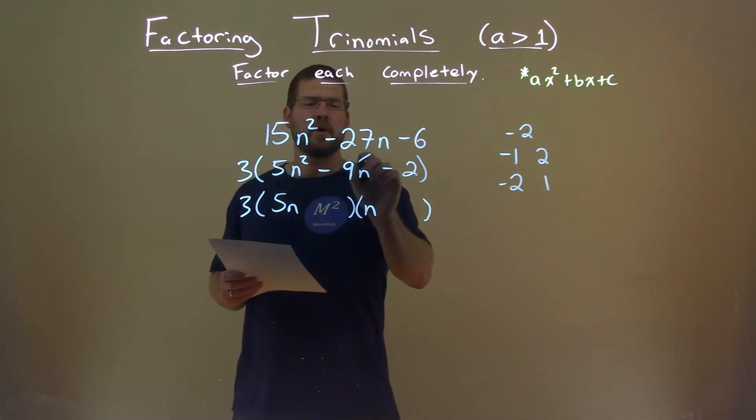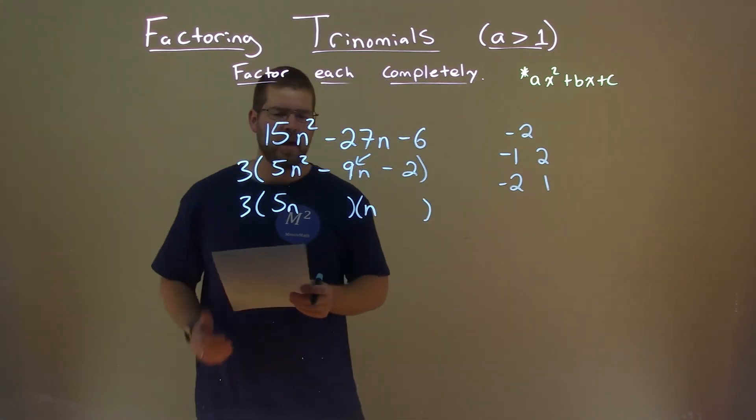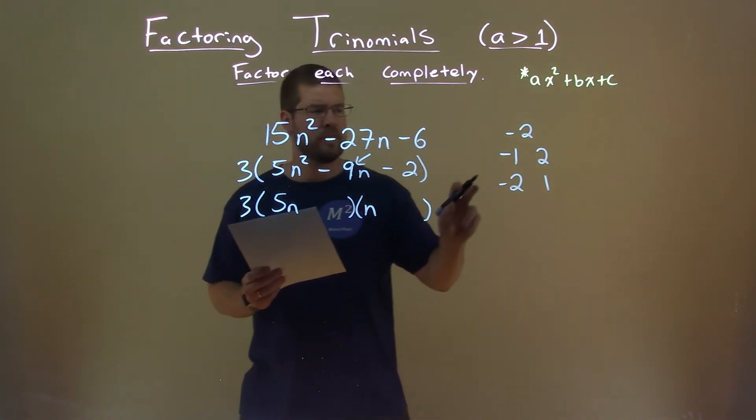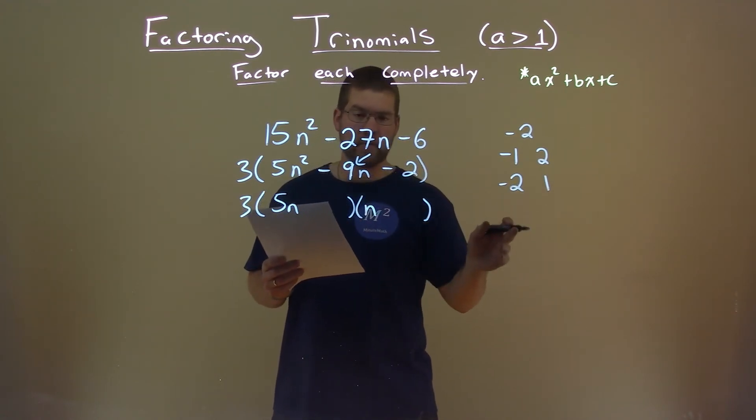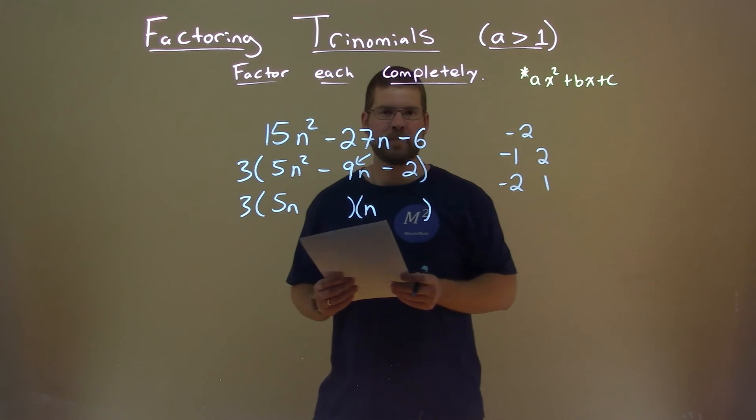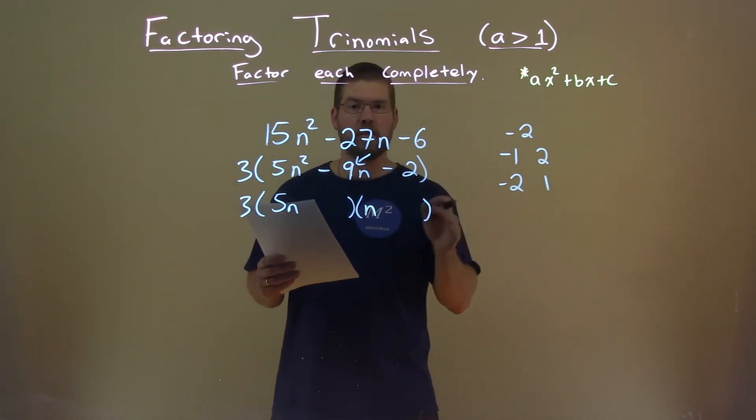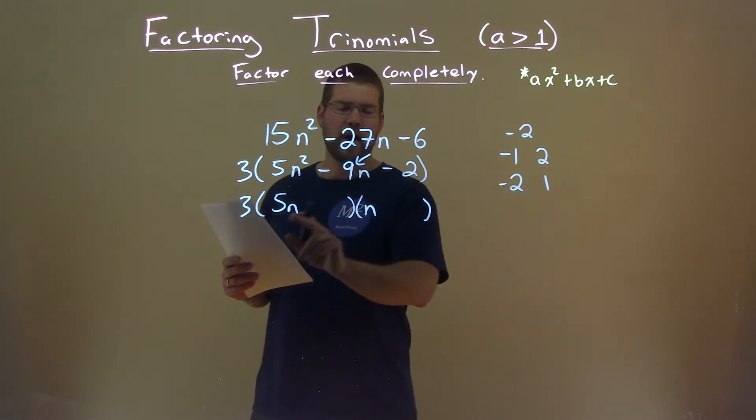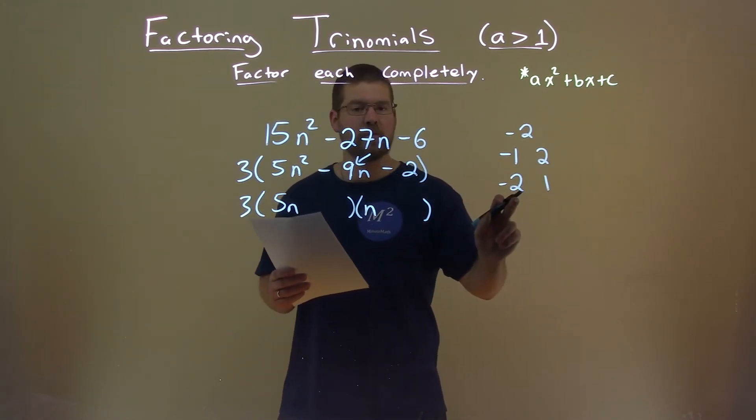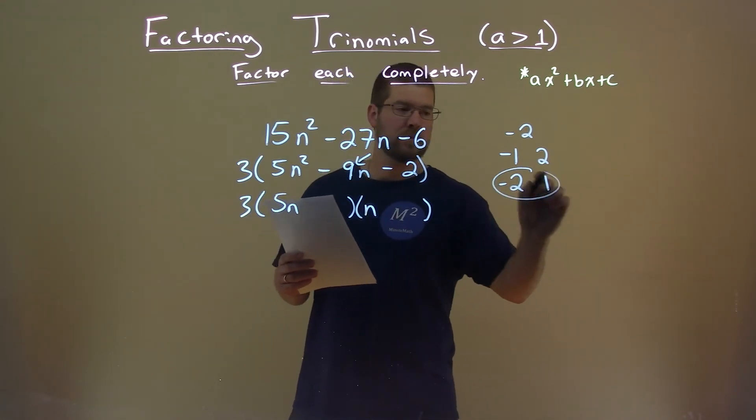So now I'm focusing on my b value, which is negative 9. I want to say, 5 times which one of these numbers plus 1 times the other number gets me close to negative 9? And I first look at this 5 and say, 5 times which one gets me closest to negative 9? And that's going to be negative 2. 5 times a negative 2 is negative 10, plus the other value, 1, gets me negative 9.